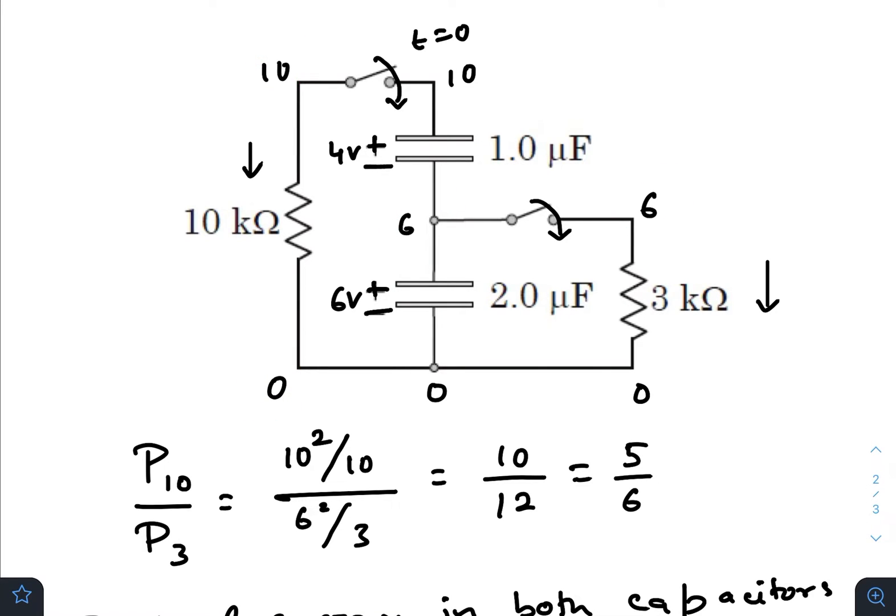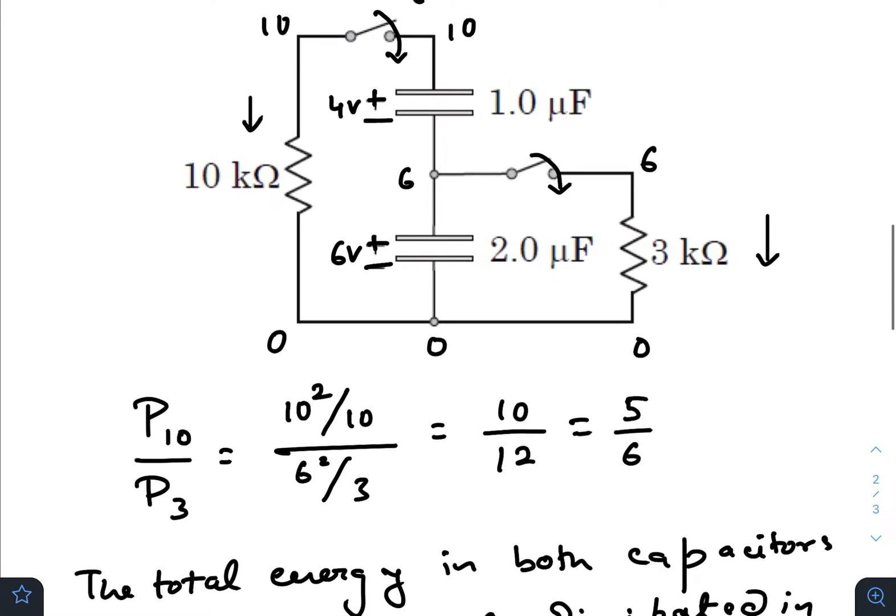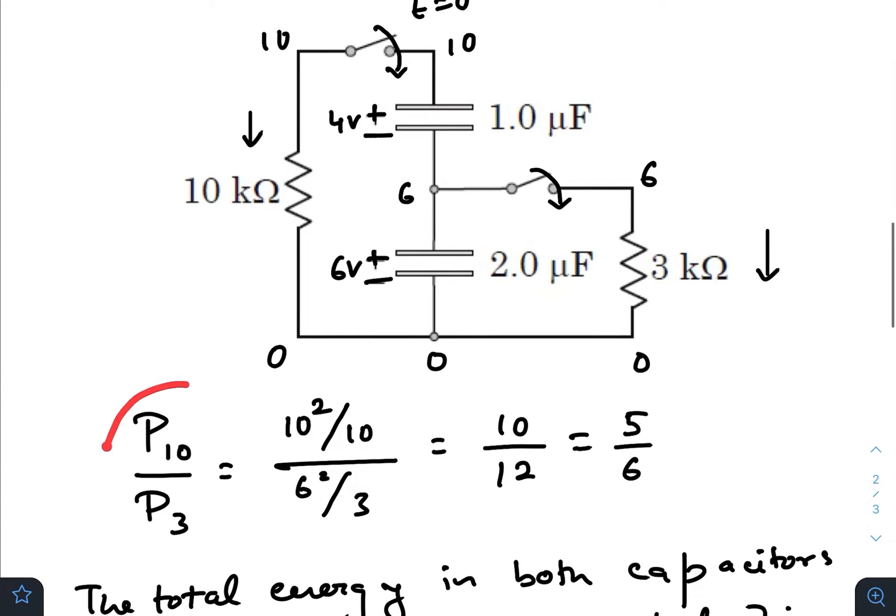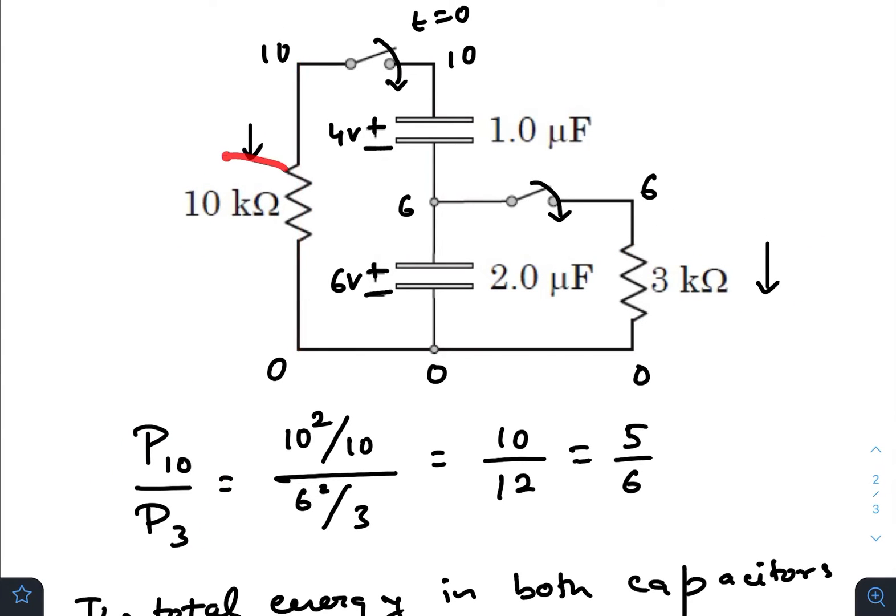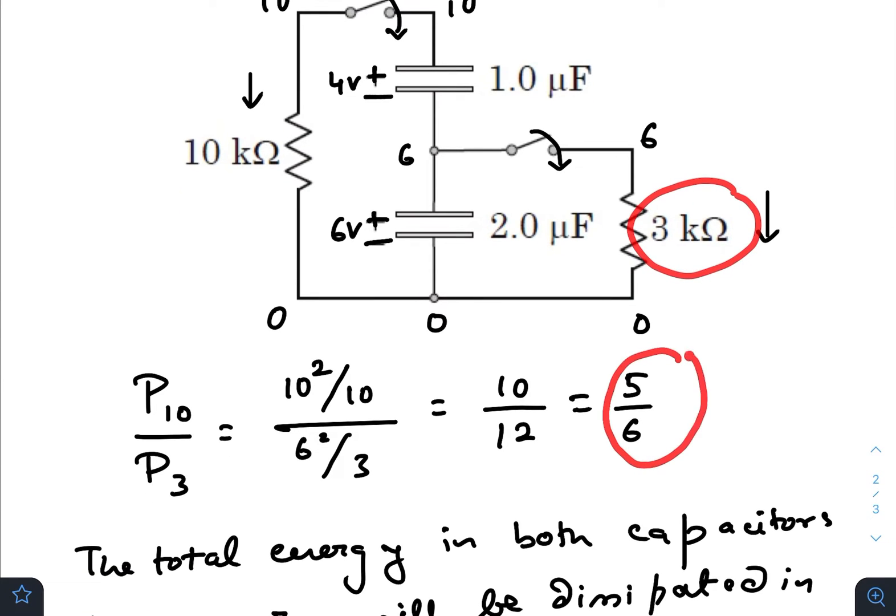If I find the ratio of power dissipated across these two resistances, that would be the potential difference squared divided by the resistance, that is 10 squared by 10k. Similarly here it will be potential difference squared, that is 6 squared divided by 3k.